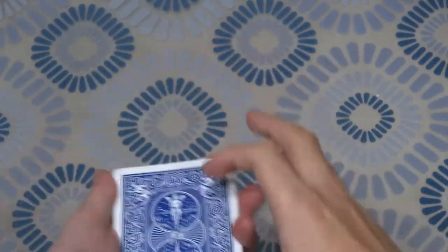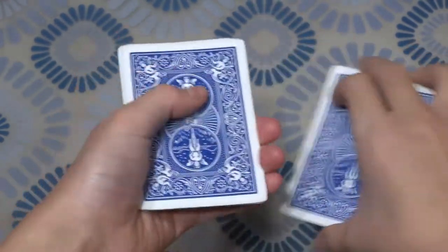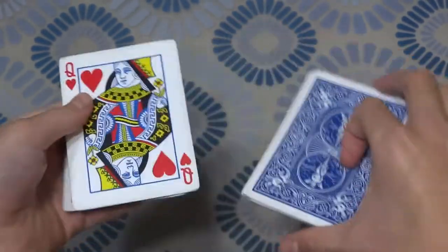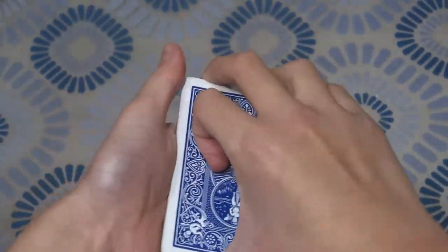And then after you do the Elmzy Count, what you're going to do is you're going to do the Elmzy Count again. And then the Queen should automatically flip over. And then you just flip the Queen back over and then you square it up.